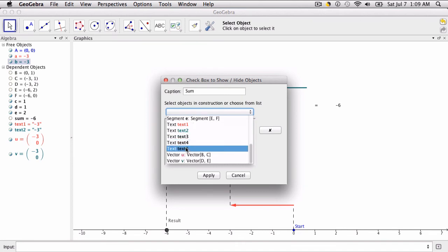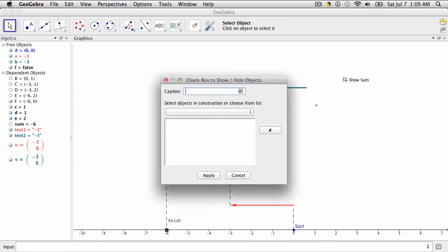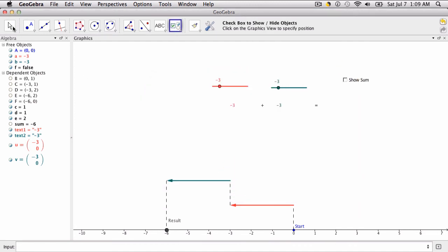It's text, sorry, it's actually the last text box we made. And click that, click apply, and then as we click or unclick this, it shows or hides the sum of these two numbers. So I'll just change a few things here.